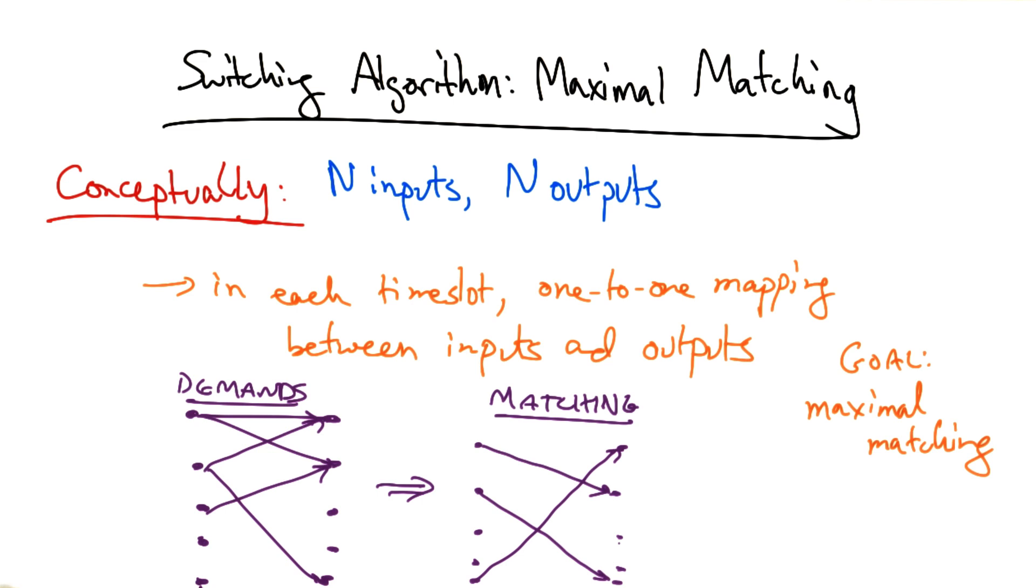Now, given demands for a particular time slot and the resulting matching, notice that certain demands were not satisfied. These packets that arrived at inputs must wait until the next time slot to be forwarded to the appropriate output port, because they couldn't be matched in the same time slot as those shown here. Remember that there must be exactly a one-to-one matching between any inputs and outputs in a particular time slot.